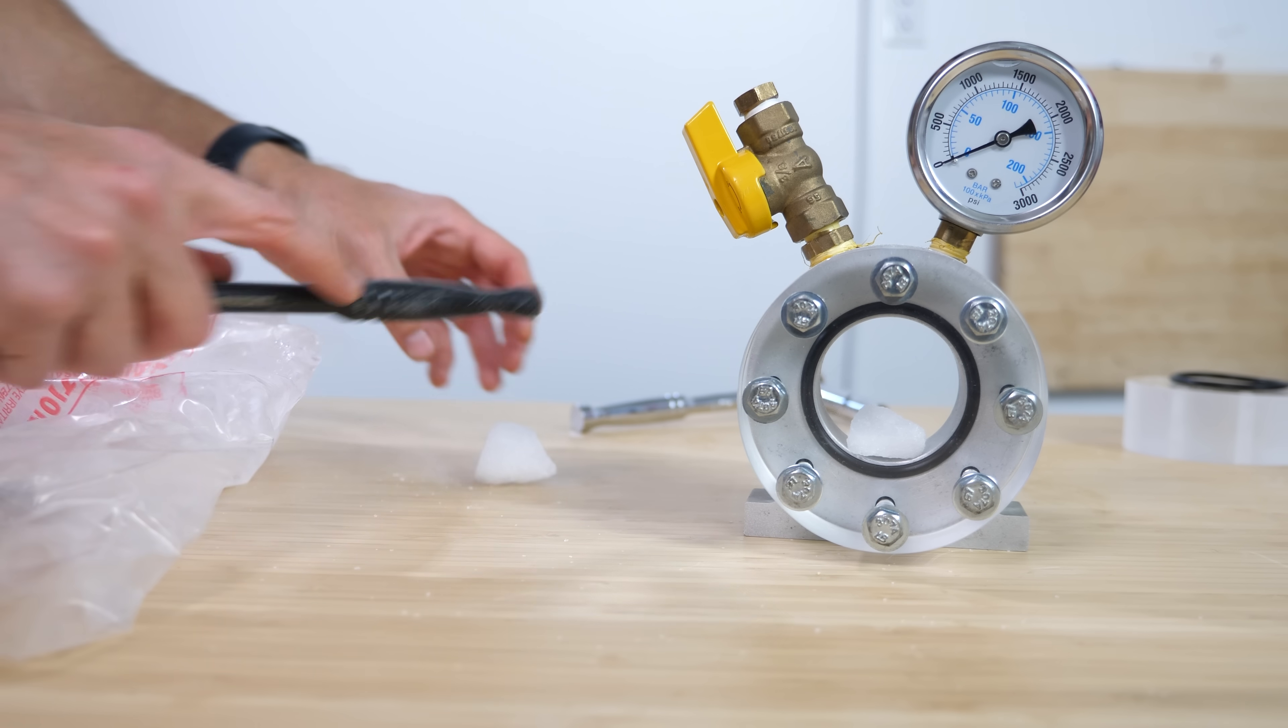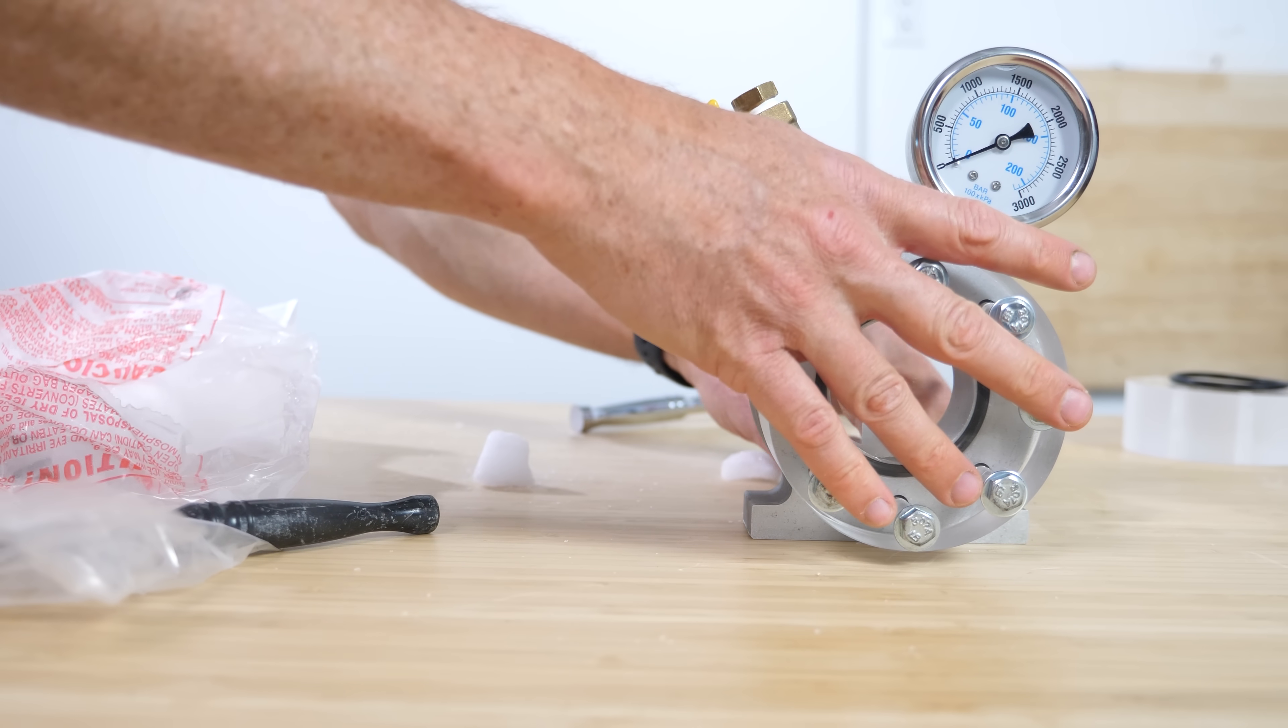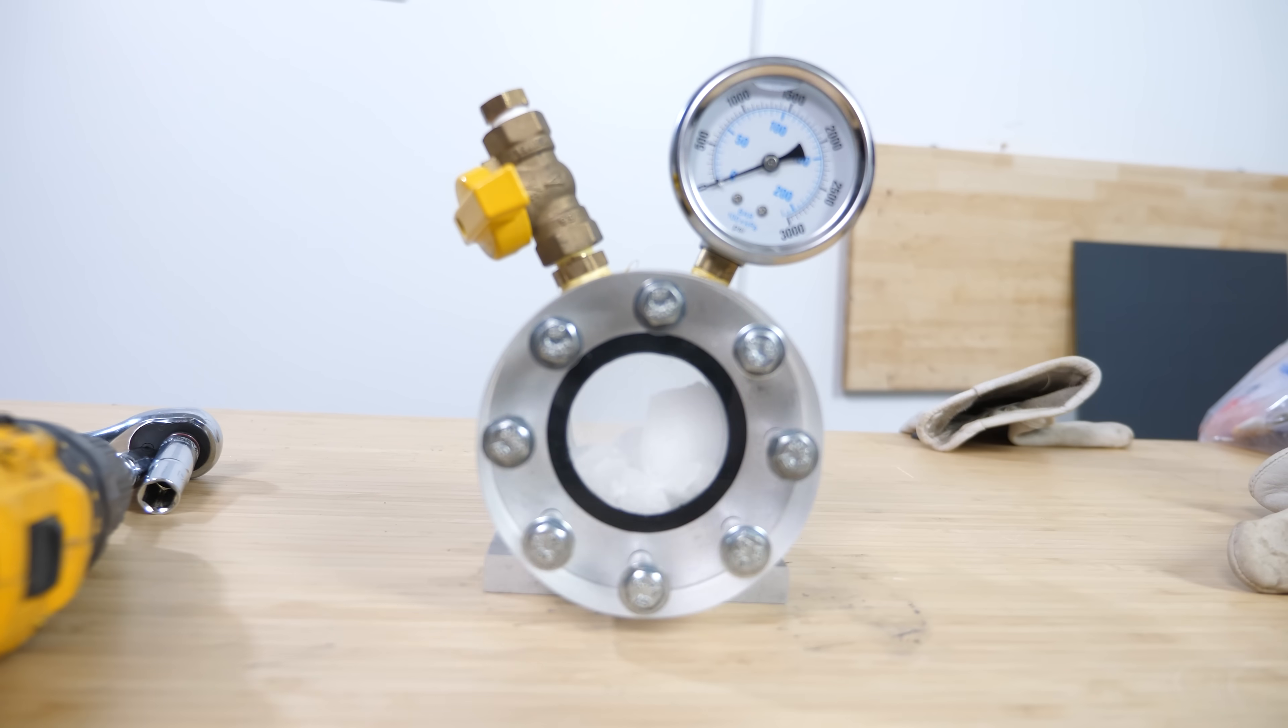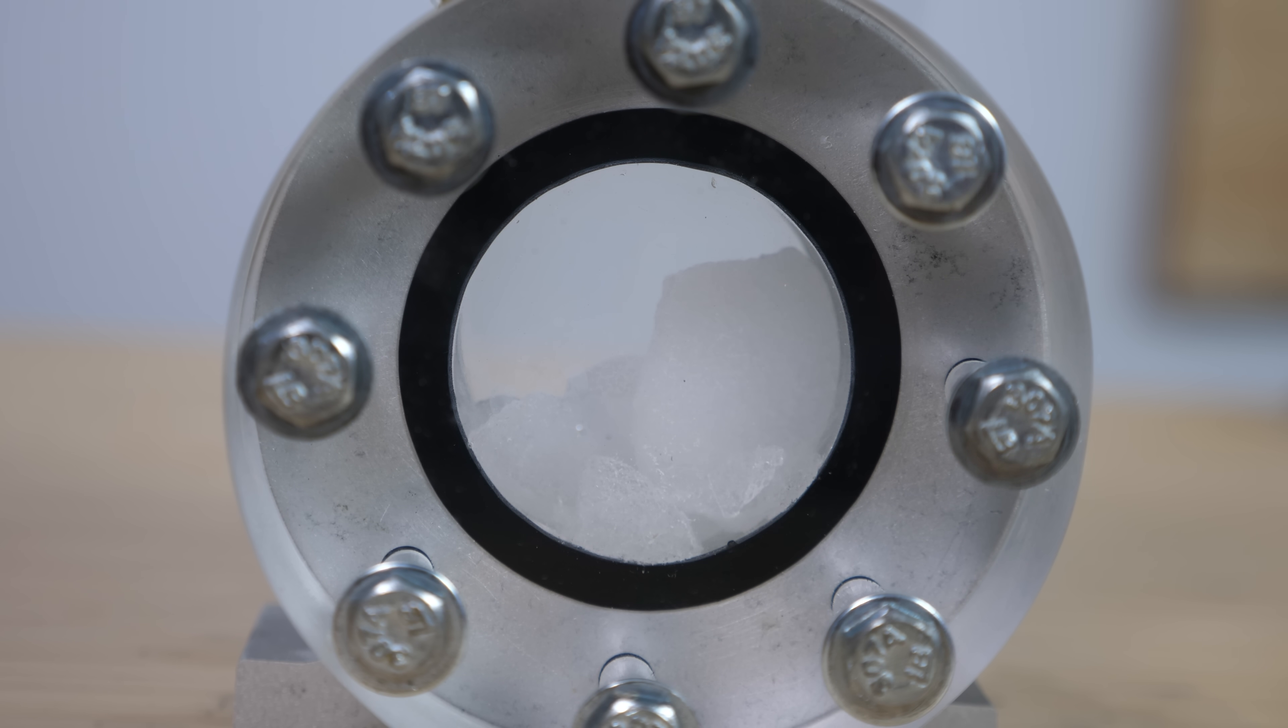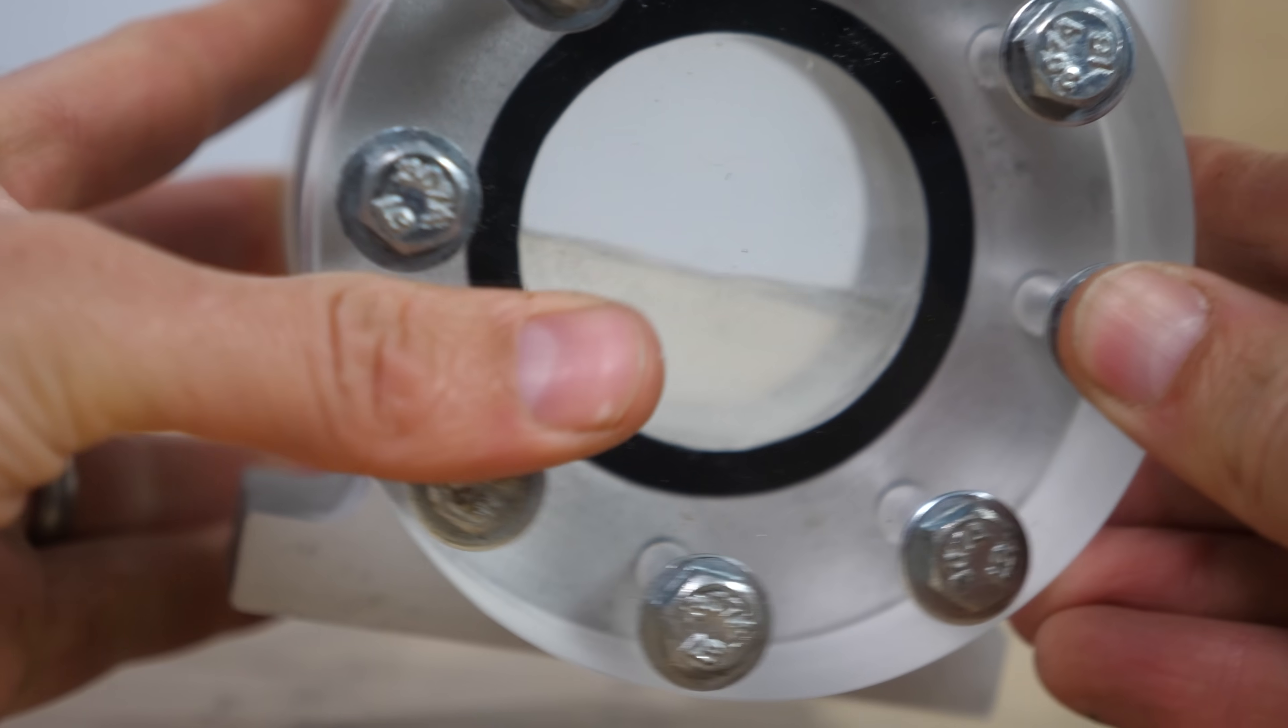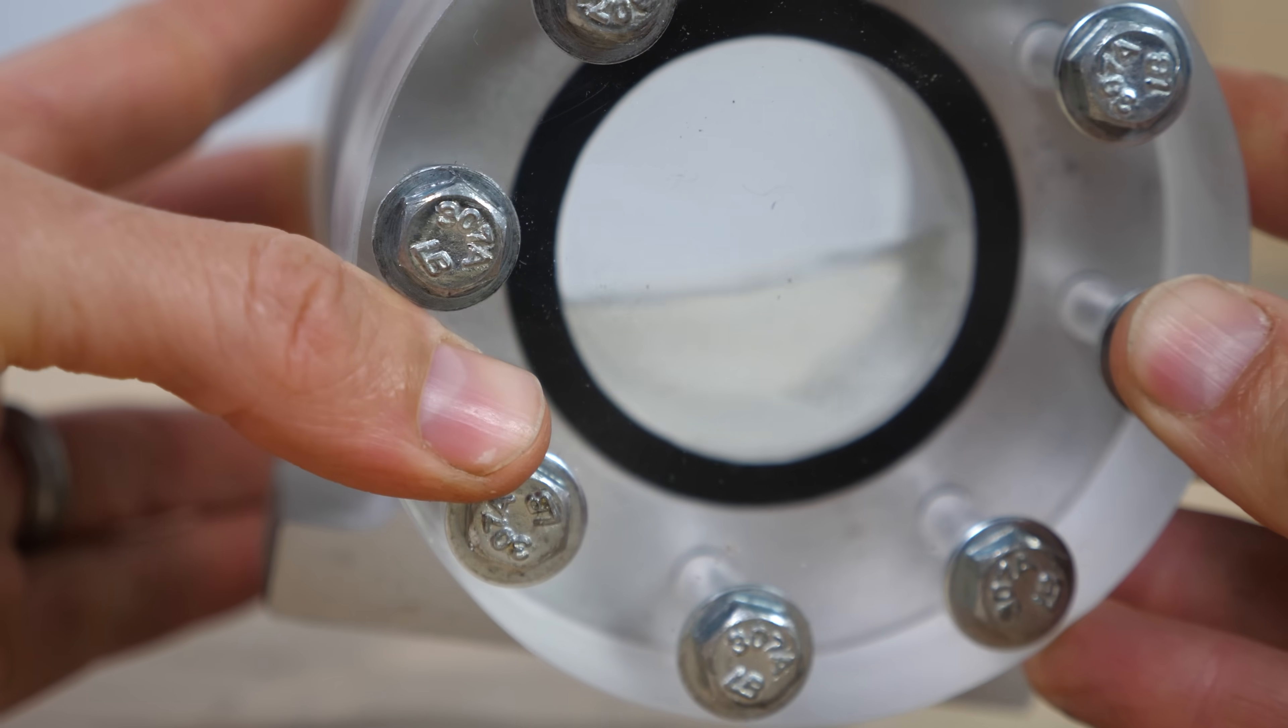When it's solid, we call this dry ice. So I'll just grab some chunks of dry ice and put it in the vessel. Now I'll tighten these bolts and then close the valve. As soon as the pressure increases, the dry ice stops turning from a solid directly into a gas. Oh, there it goes. But it can now turn into a liquid. So now we've got liquid CO2 in here. If I release the pressure, it freezes into solid CO2 again.